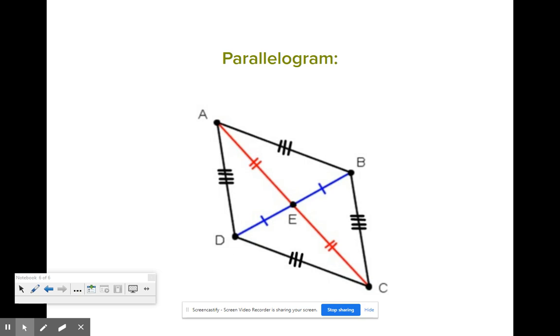All right, so finally, your picture should look kind of messy here. I would just add in the parallel markings that we knew from the beginning. We have our opposite sides are congruent.